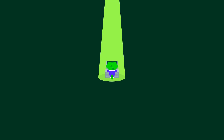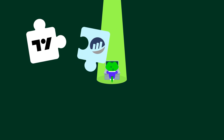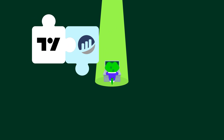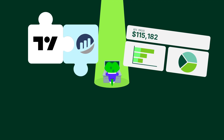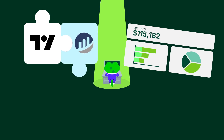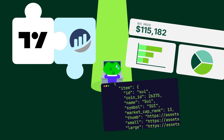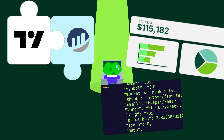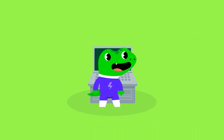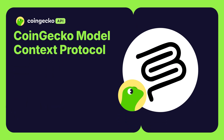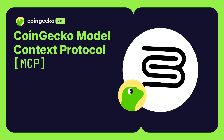Until now, analyzing crypto market data meant piecing together data from multiple tools, navigating complex dashboards, or even writing complex code. Say goodbye to all those problems. Introducing CoinGecko's Model Context Protocol, or MCP.